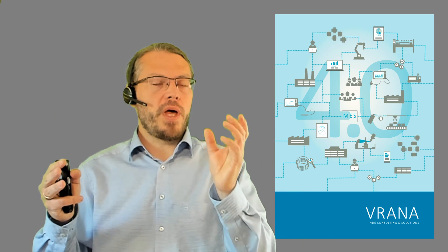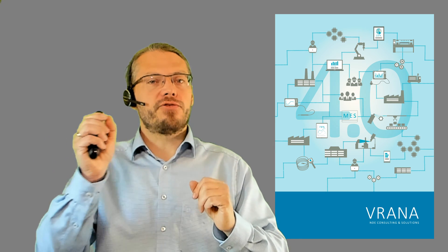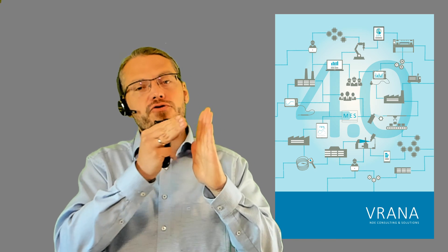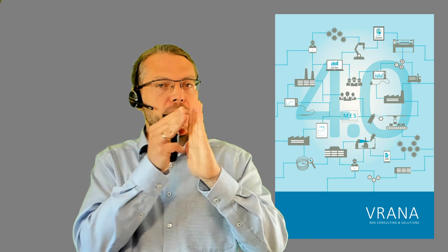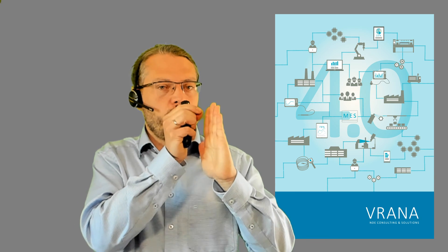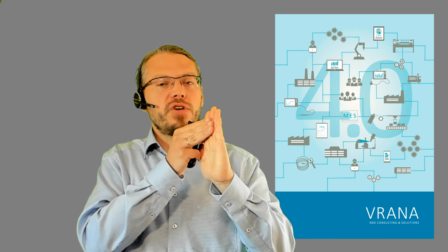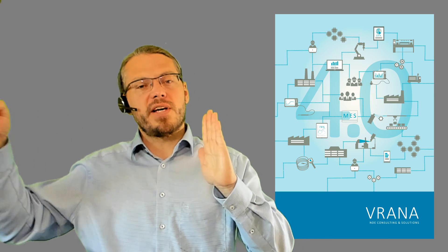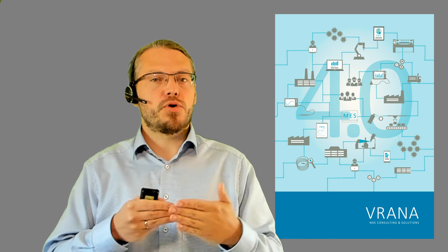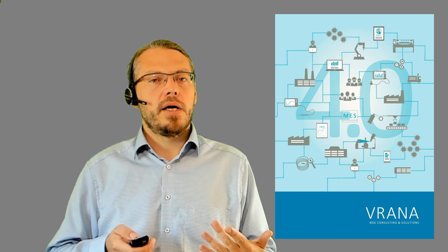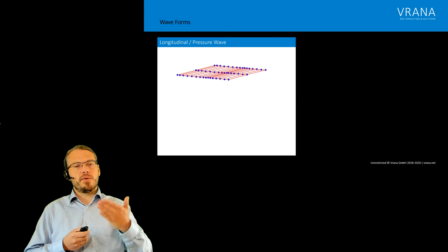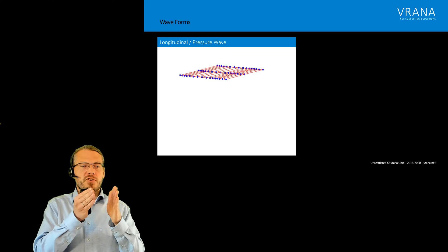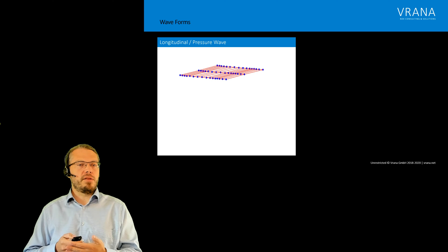Now what we said last time is we have this ultrasonic generator, we have a probe, and the generator is generating a very short pulse of oscillations which is then traveling through our component. You can imagine the probe is oscillating this way and then the wave is going through the component in the same way. So actually our excitation is going the same way as our propagation direction, and this is what we call a longitudinal or pressure wave. This is shown here. Now this is a continuous wave and what we have is actually this one traveling through our component.